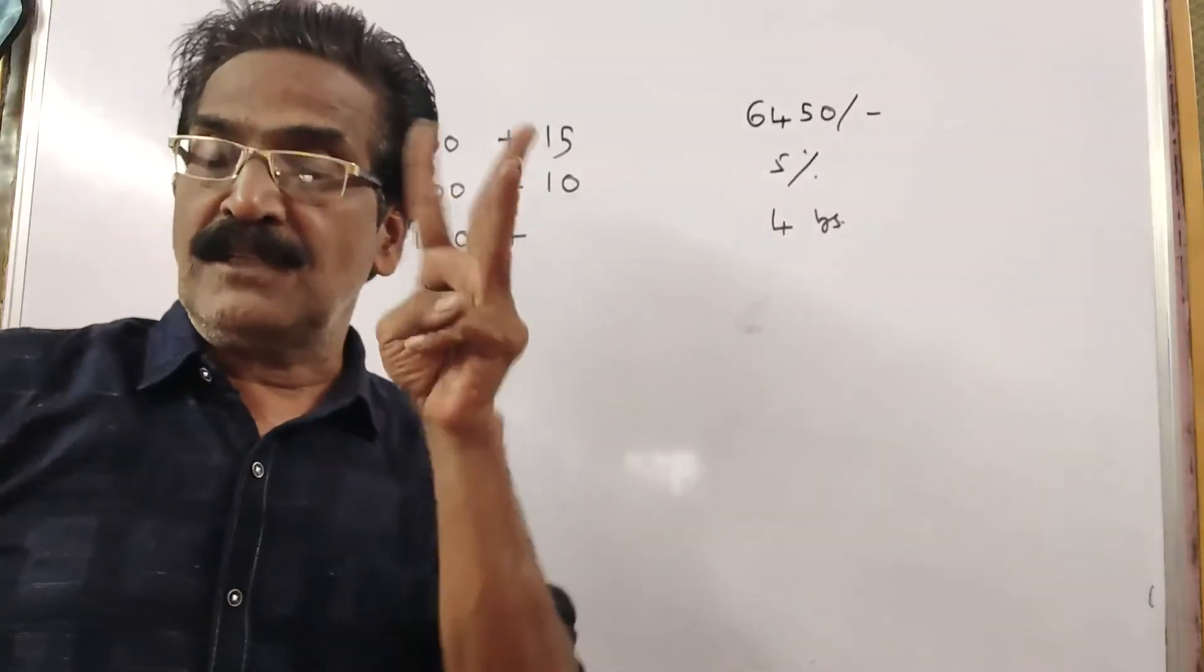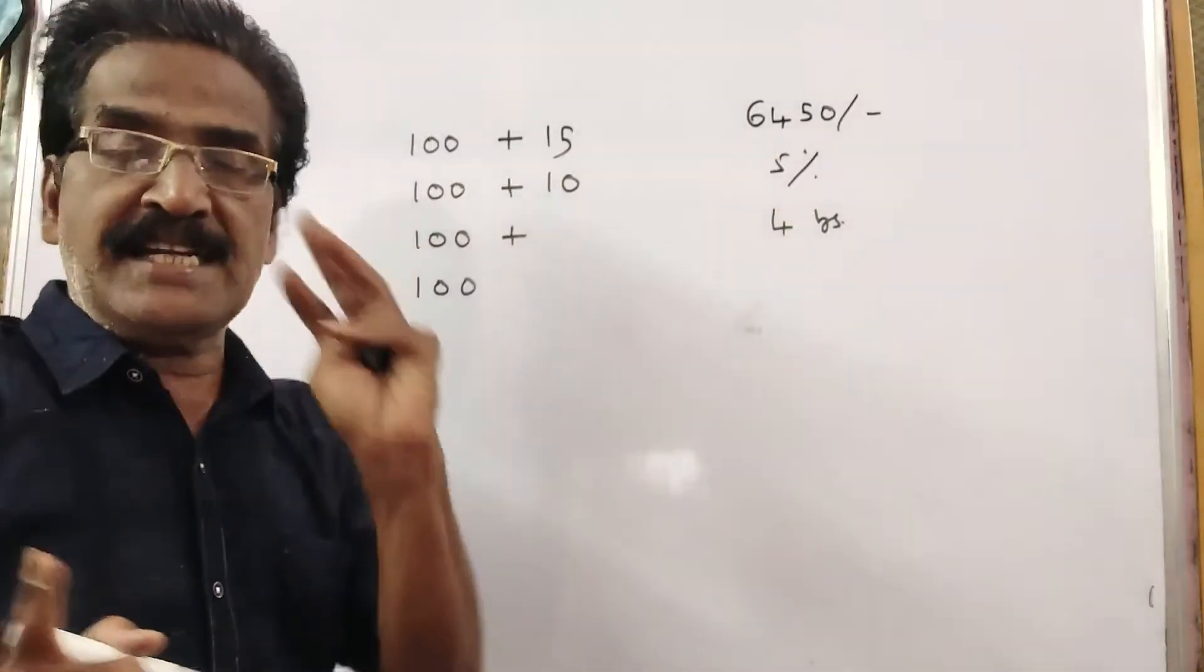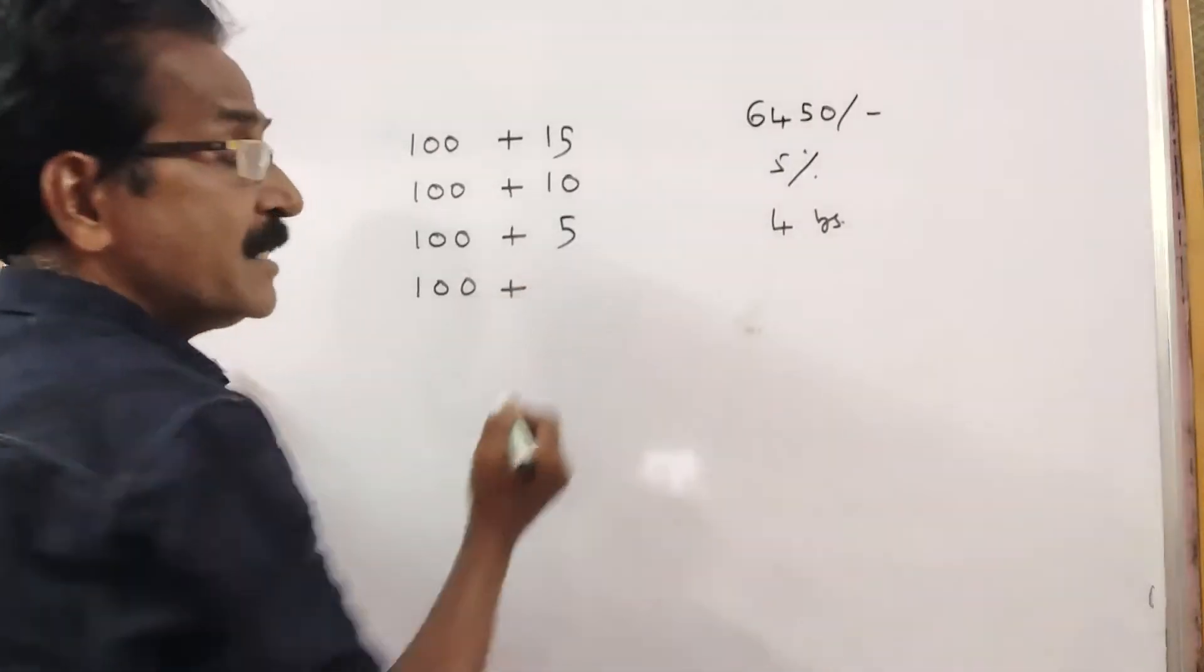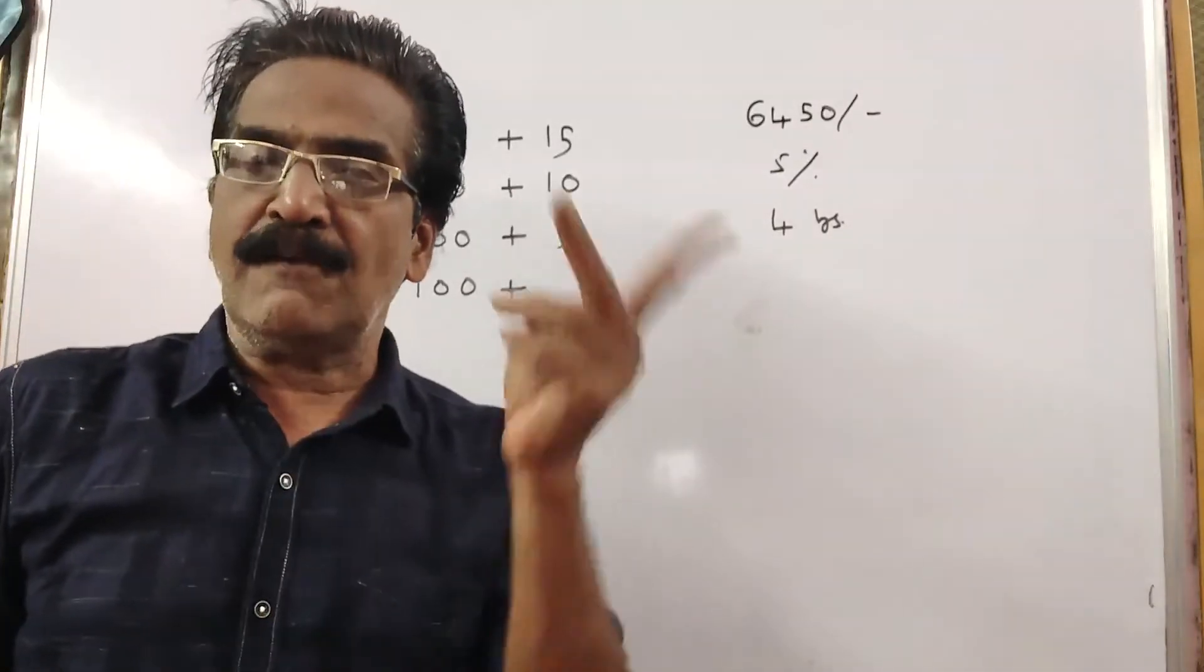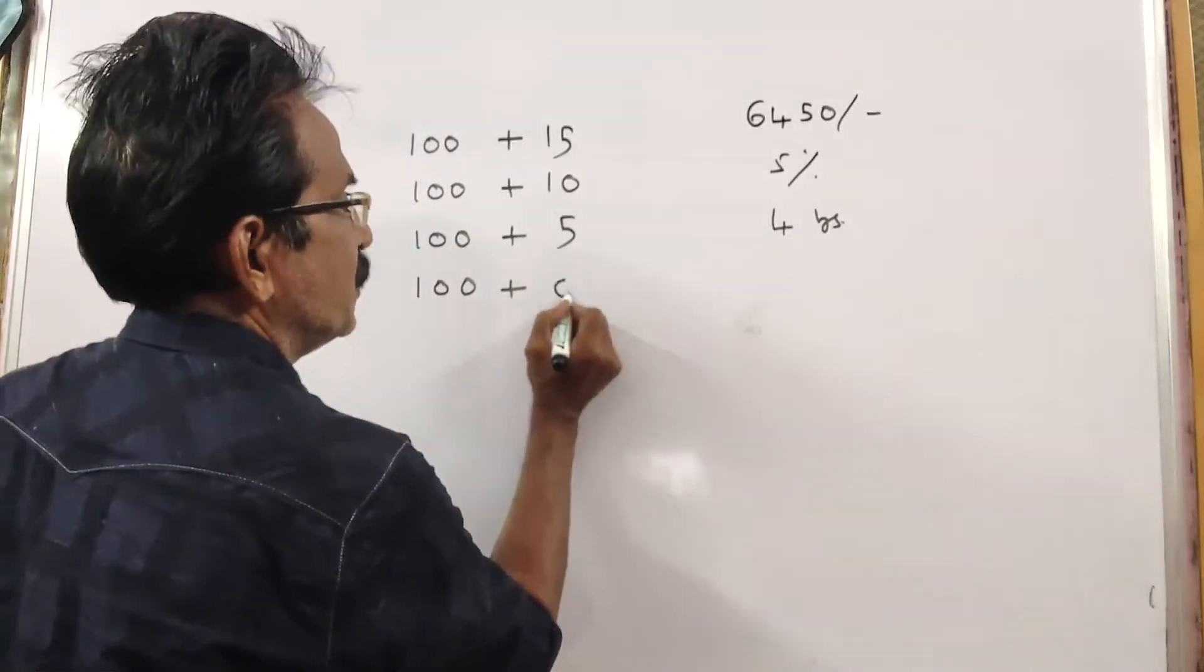The installment you pay at the end of the third year will fetch interest for only 1 year, 1 into 5, Rs. 5. And the installment you pay at the end of 4 years, the final installment, will fetch no interest, that is Rs. 0.